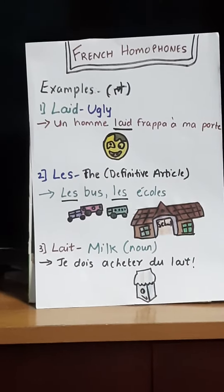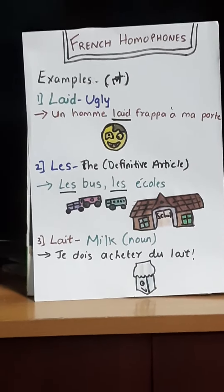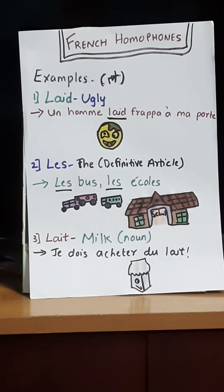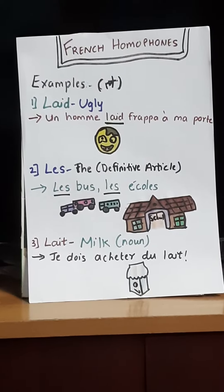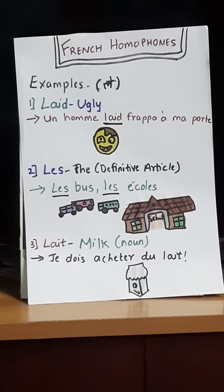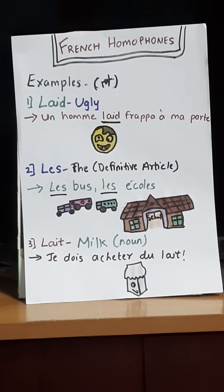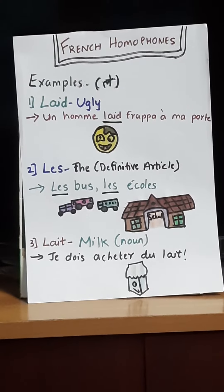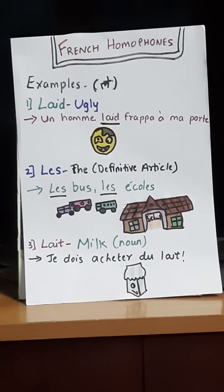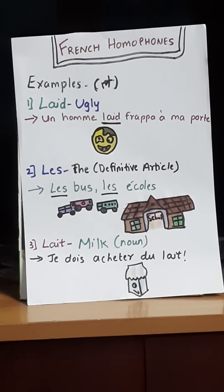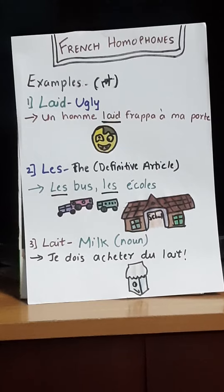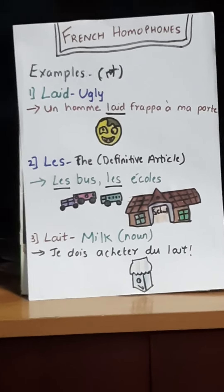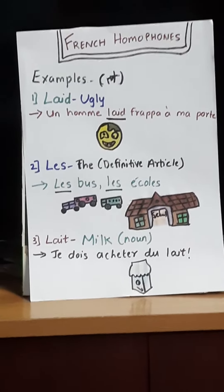The last one is 'lait', spelled L-A-I-T, which means milk. For example, 'Je dois acheter du lait' means 'I have to purchase milk.' I hope you understand these French homophones.